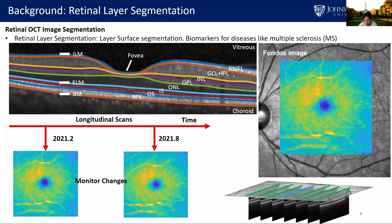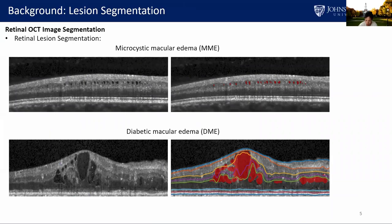As for segmentation, the layer surfaces cannot intersect with each other and have a strict topological ordering. Besides retinal layer segmentation, retinal edema, cysts, and drusen — here I will just use lesions to represent them — are also important biomarkers for monitoring disease progression. Examples include microcyst macular edema (MME) and diabetic macular edema (DME). MME develops in approximately 5% of people with MS and has been shown to be correlated with MS disease severity. The size, position, and number of lesions are varying and do not follow a fixed anatomical topology, requiring less explicit constraints for the automated algorithm.